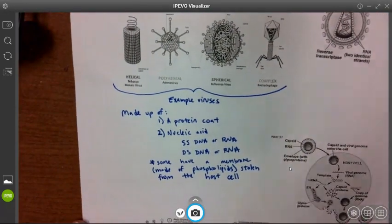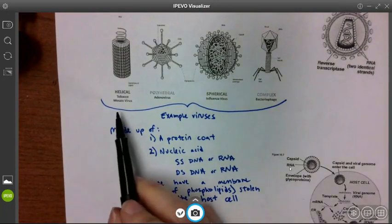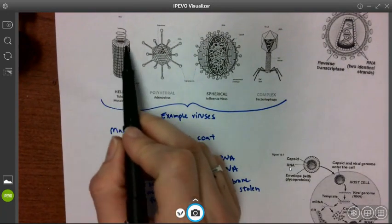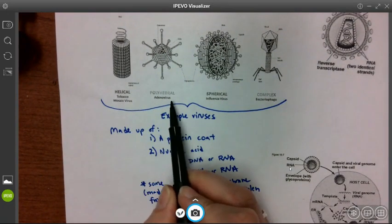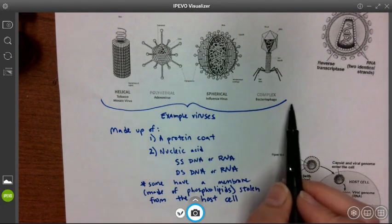There are many different examples of types of viruses. Here we have the tobacco mosaic virus, which is a virus that infects plants, adenovirus, influenza virus, and bacteriophage.